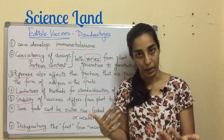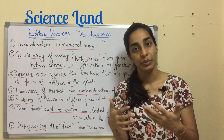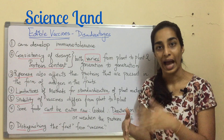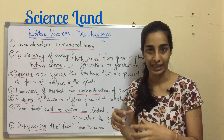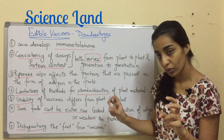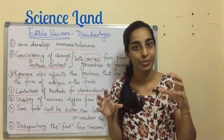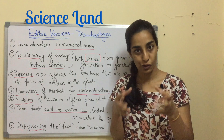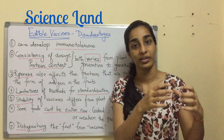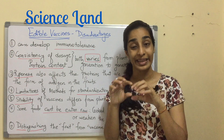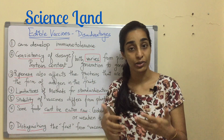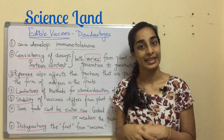Sixth, some foods cannot be eaten raw. When cooked, the antigen denatures or the protein weakens, which is a significant disadvantage. Finally, and most importantly, distinguishing the vaccine fruit from a regular fruit is a major challenge. Since the edible vaccine is in a plant that people also normally consume, if there are no clear identifying characters between the vaccine plant and the regular plant, it can lead to mal-administration of the vaccine and further lead to tolerance.